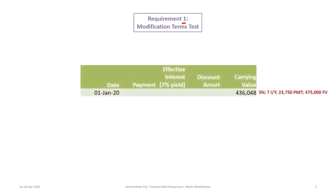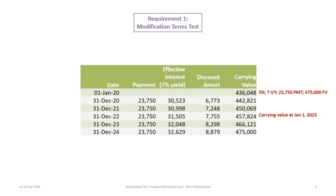Let's begin with Requirement One: the modification of terms test. We must first record the note on January 1st, 2020, at its present value calculated over five periods for the five-year term. The resulting present value and carrying value of the note is $436,048. The restructure occurs on January 1st, 2023, so we must determine the carrying value at December 31st, 2022, since payments are at the end of the period.